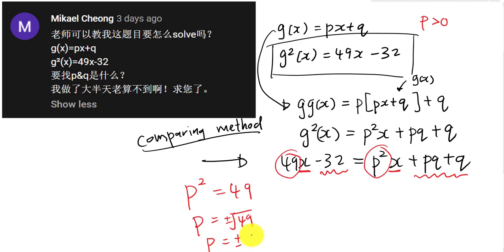So p² will equal to 49. Normally, this kind of question in the exam, they will tell you p must be bigger than zero or something like that. Or if the question doesn't say anything, then your p just square root, positive-negative 49, p is just positive-negative 7.